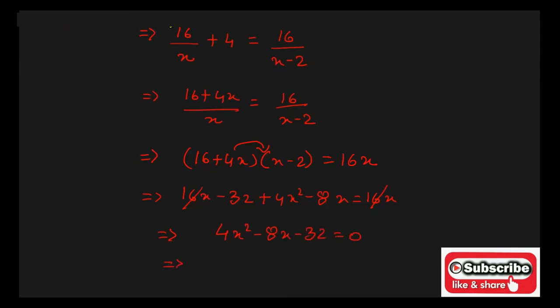Again, after simplification, this can be written as X square minus 2X minus 8 is equal to 0. Now, solving this quadratic equation, we will be getting the answer as X plus 2 into X minus 4 is equal to 0. The values of X will become X is equal to minus 2 or X is equal to plus 4.